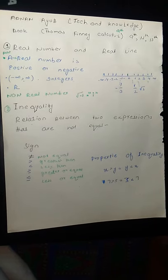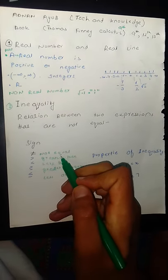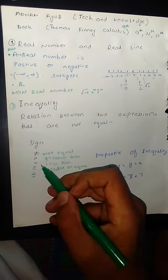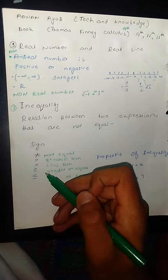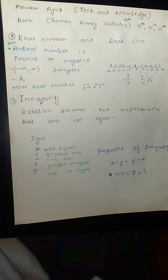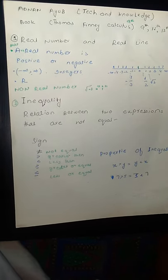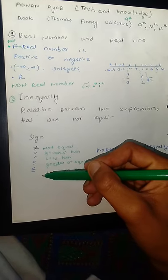We can represent inequality with five signs: not equal, greater than, less than, greater than or equal to, and less than or equal to. These five signs represent inequality.